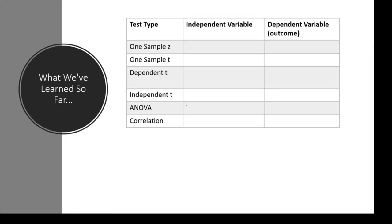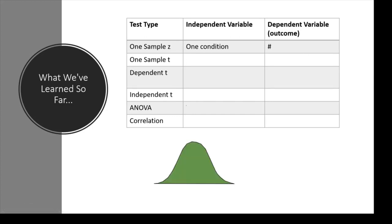Let's talk about what we've learned so far so we can map it on. The first thing we learned was a one-sample z, and we looked at how one condition predicted some number outcome. For example, a magic tea group compared to a known average IQ, to see how the IQ of people who consumed the tea might have changed — comparing that distribution to the normal IQ.